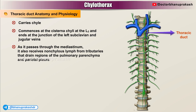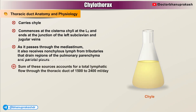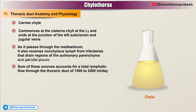As the thoracic duct passes through the mediastinum, it also receives non-chylous lymph from tributaries that drain regions of the pulmonary parenchyma and parietal pleura. The sum of these sources accounts for a total lymphatic flow through the thoracic duct of 1500 to 2400 ml per day.